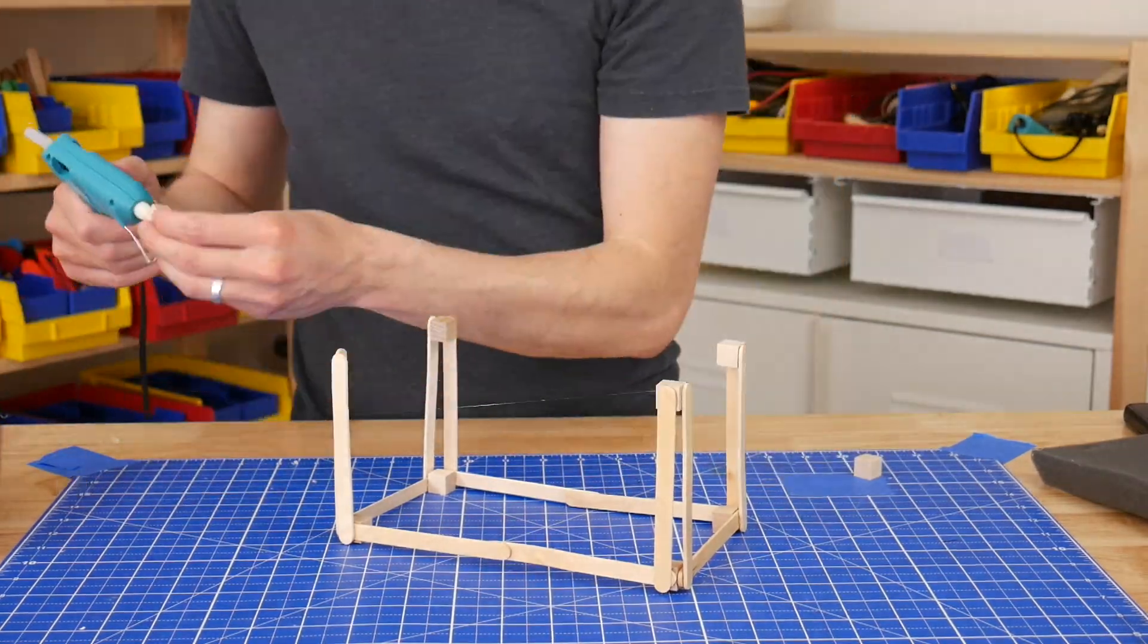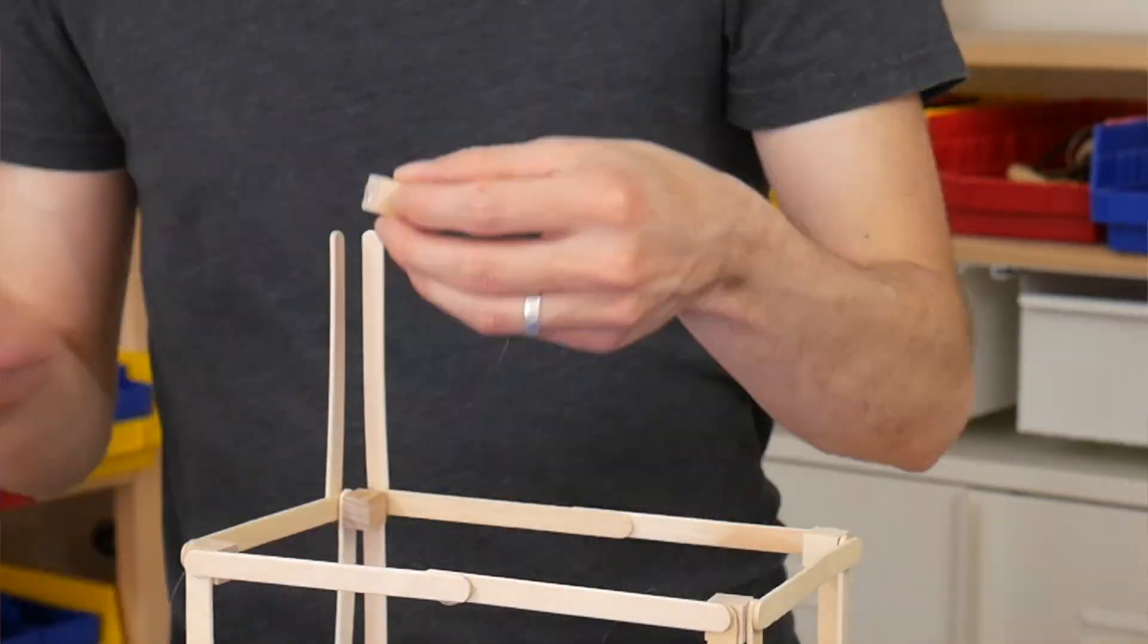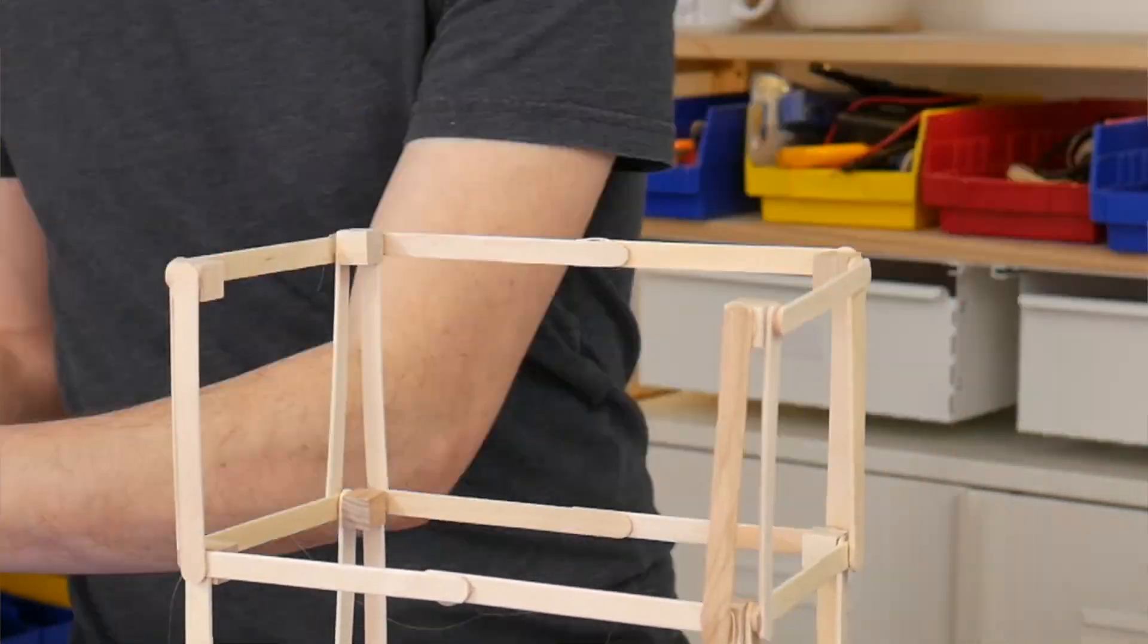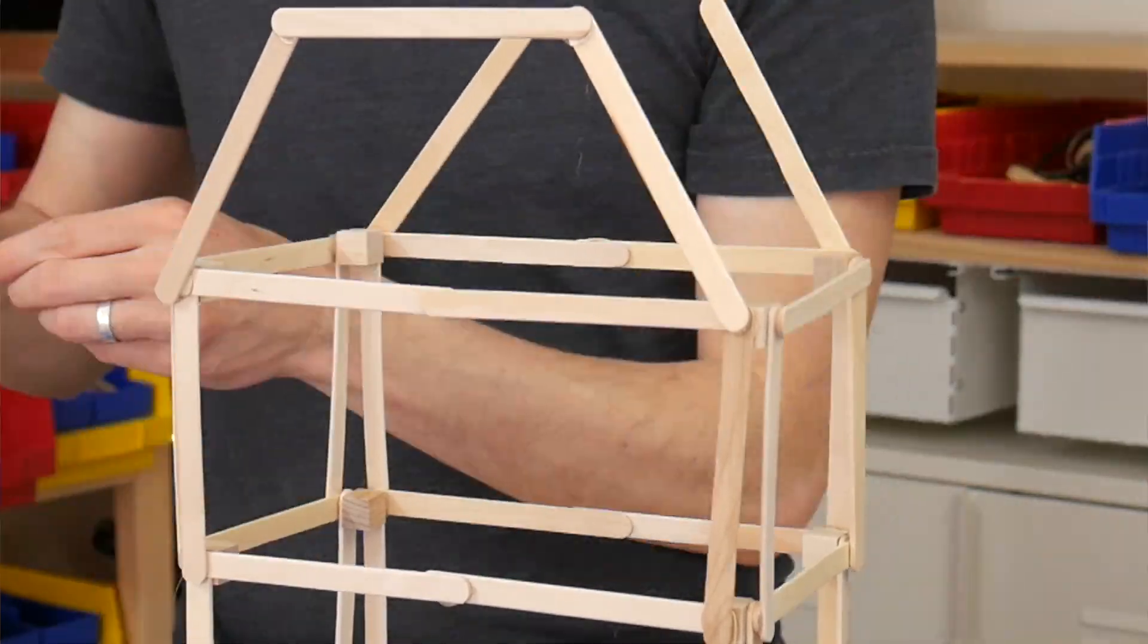One is to use this stick and block building technique. By attaching craft sticks to the side of the block and building upward, you'll be able to make a much stronger structure than if you just glued the craft sticks edge to edge.